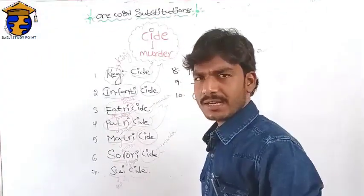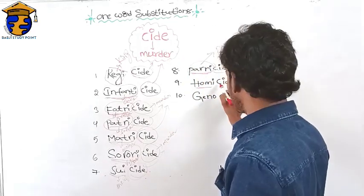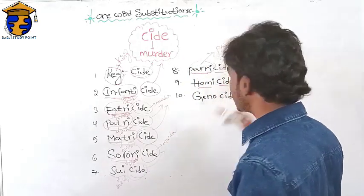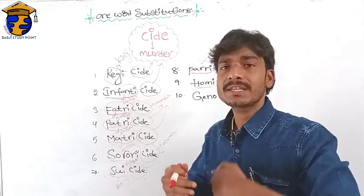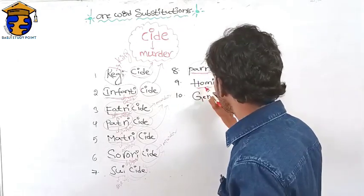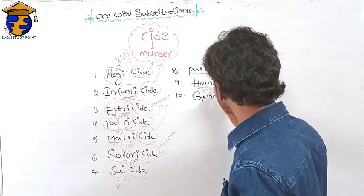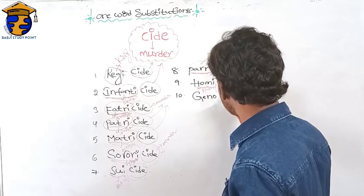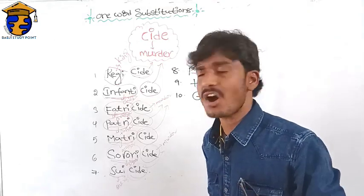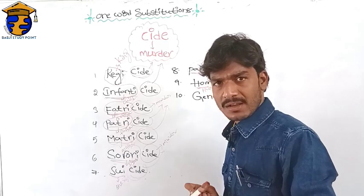Next one: homicide. What is the meaning of homicide? '-cide' means murder. 'Homo' means human being. The murder of a human being is called homicide.